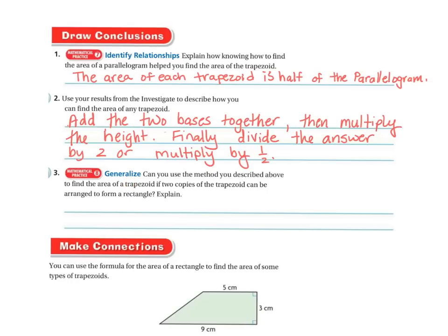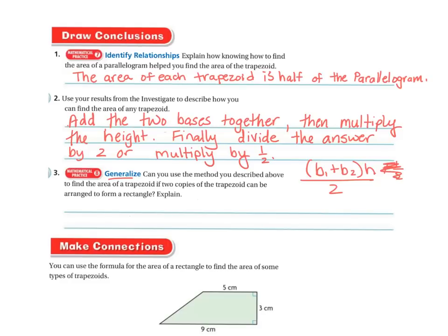Generalizing — the formula looks like this: base 1 plus base 2, multiplied by the height, and then times one half. Or you can divide by 2 instead. Can you use this method if two copies of the trapezoid form a rectangle? Yes, you can use the same model, but with a rectangle the difference is that you wouldn't be dividing by half — you would just do the two sides together.